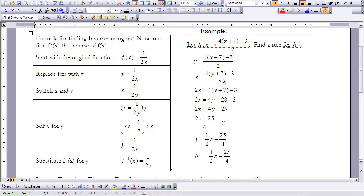So now we need to get rid of this 2. We're going to multiply both sides by 2. That gives me 2x = 4(y+7) - 3. Then we can distribute the 4. So that's 4y + 28 - 3. We're going to combine some like terms here. We're going to combine 28 - 3, which is 25.